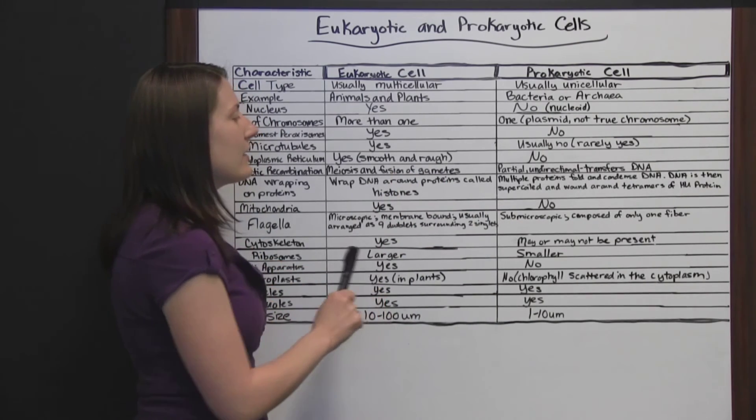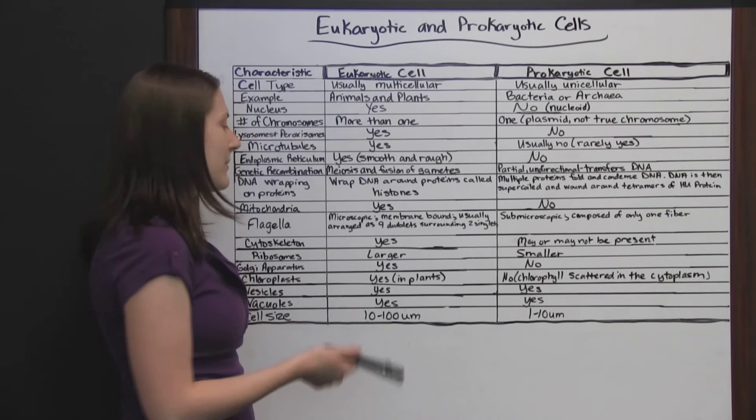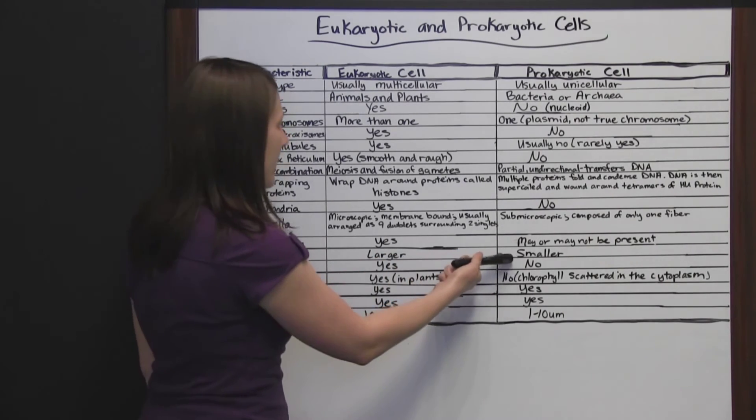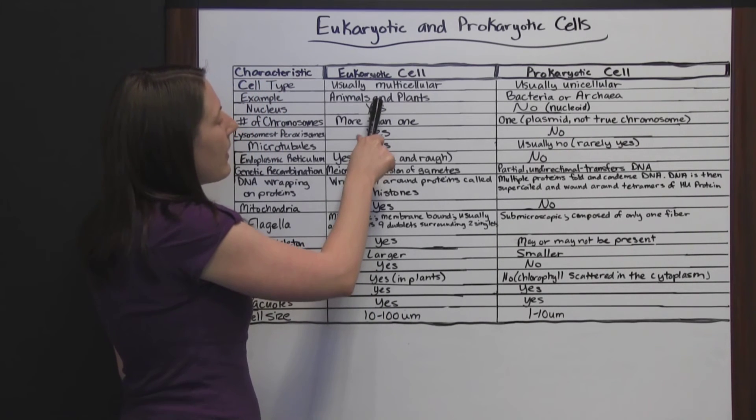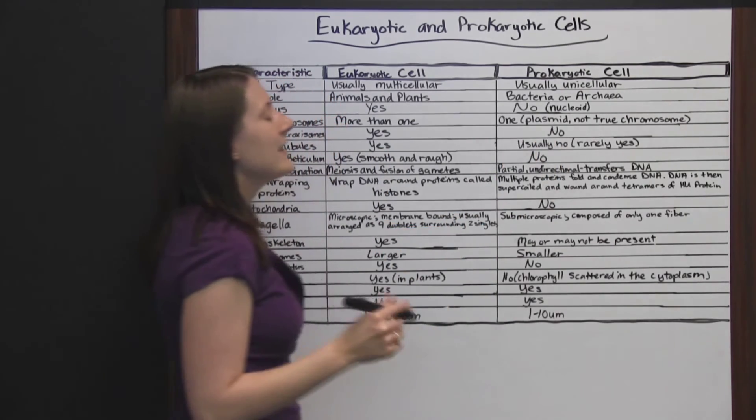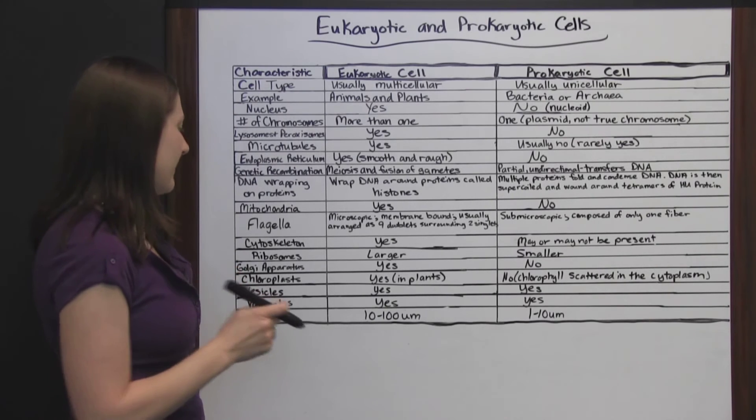On some of these other characteristics, they do have something similar. They both have ribosomes, but one is larger and one is smaller. They both have nuclear material, so the eukaryotic cell has a defined nucleus and the prokaryotic cell has the nucleoid, which has some genetic material in it.